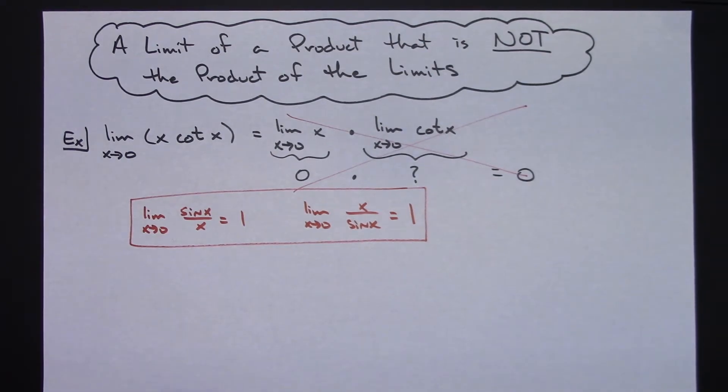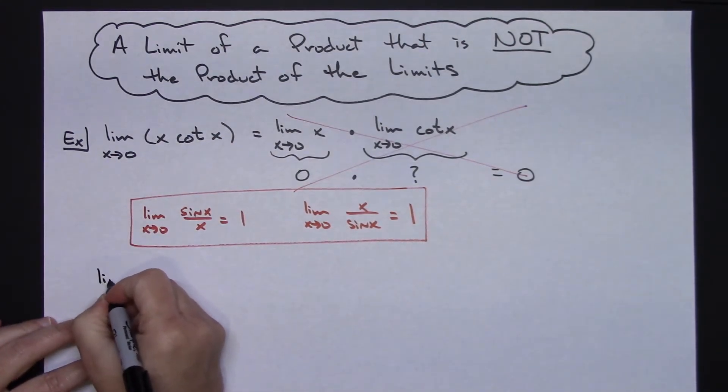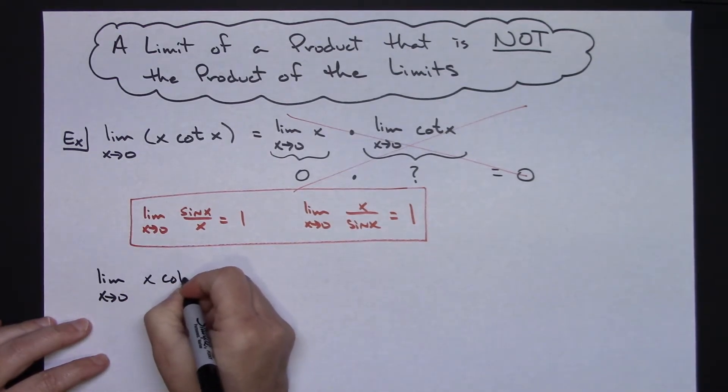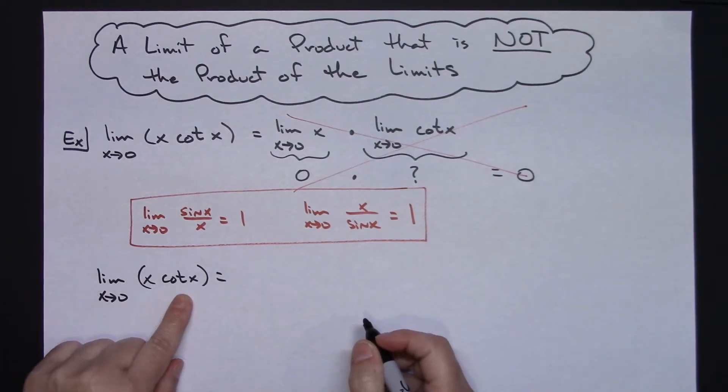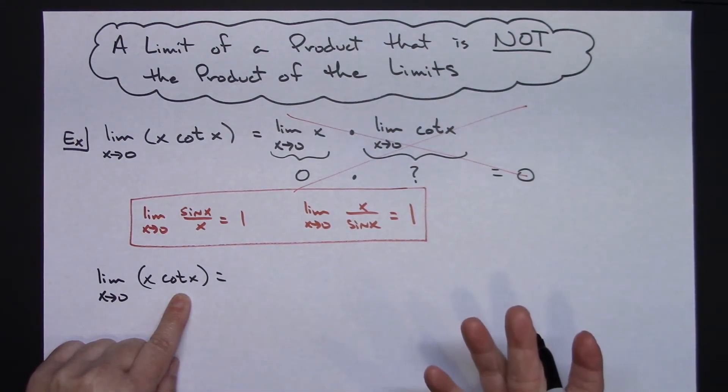So what I would do is I would start with the limit as x approaches 0 of x cotangent x. So my first thing, I'm going to do a substitution and I'm going to switch cotangent for an equivalent identity that I know matches, which would be cosine over sine.